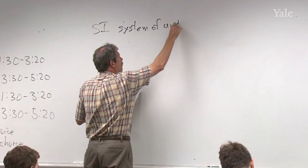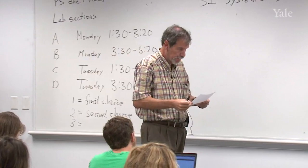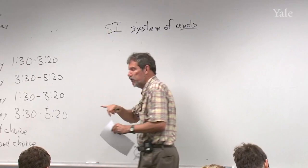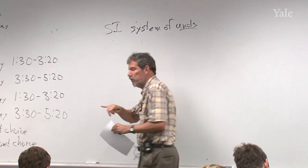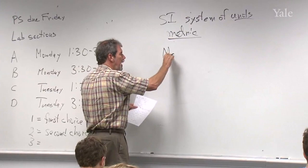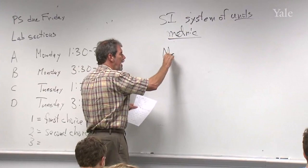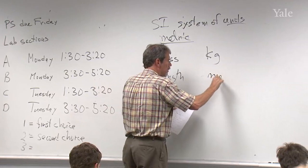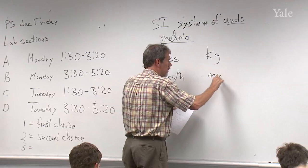We'll be using SI throughout the course primarily, although there are some traditional units that come up in meteorology and oceanography that don't necessarily fit into this SI system. SI is French — Système Internationale — we just say the International System of Units. It might also be called the metric system. The three foundation blocks are mass, for which we use kilograms; length, for which we use meters; and time, for which we use seconds.